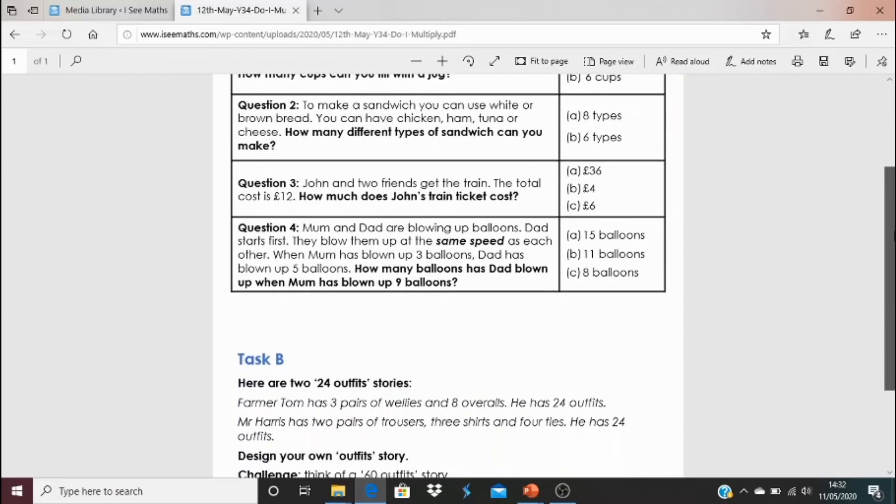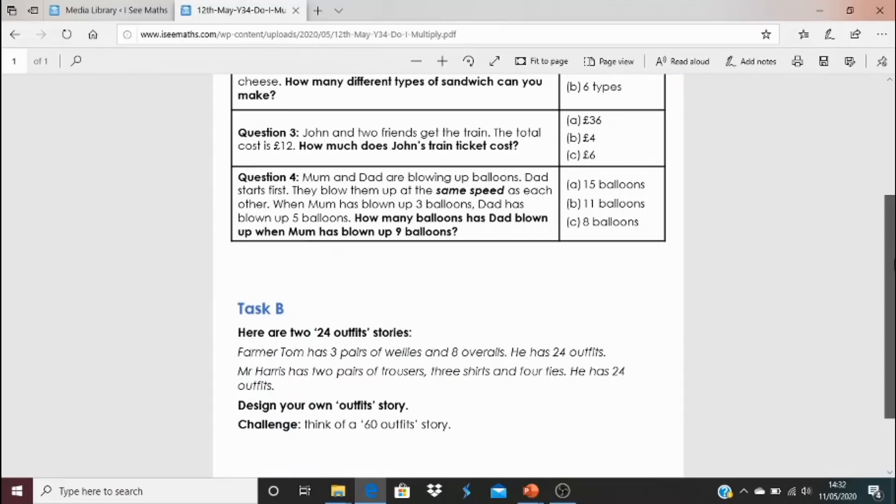Now, the task B is very different. Okay. And so for this one, it's a combinations kind of problem. And it's using outfits of clothes. So here we have one example for you of a 24 outfits story. Farmer Tom has three pairs of wellies and eight overalls. He has 24 outfits. So for each pair of wellies, there's eight overalls that he could match them with. So that is three lots of eight. So there is a story for 24 outfits.